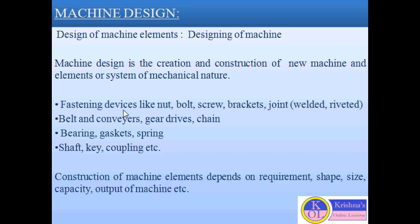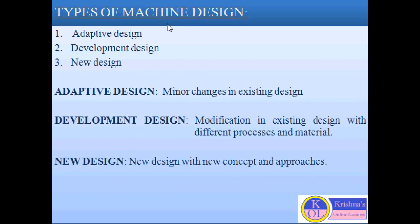Some other machine elements can be belts, conveyors, gears, gear drives, chains, different types of bearings, springs, shafts, keys, couplings, and so on. The construction of these machine elements depends on the requirement — size, shape, capacity, and the output of the machine. Basically, we can say the design is made to satisfy the need of the customer.